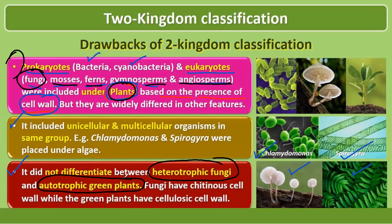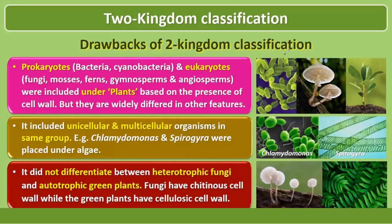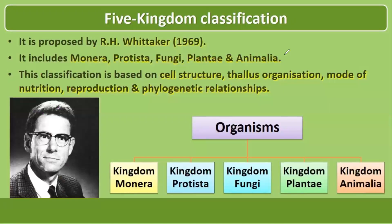Fungi also have a chitin cell wall while plants have a cellulosic cell wall. Because of these drawbacks, two-kingdom classification was rejected. Then came the five-kingdom classification, proposed by R.H. Whittaker in 1969, which included Monera, Protista, Fungi, Plantae and Animalia.